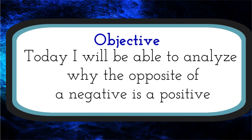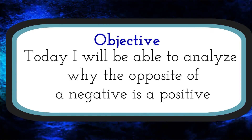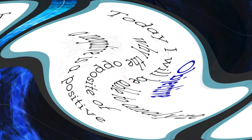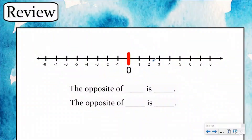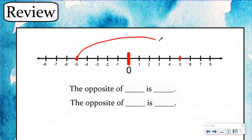Let's start by rewinding back to our last lesson. In our last lesson we were looking at opposites. So let's take a look at five and negative five. We recognized numbers can be opposite if they're on opposite sides of zero and they're the same amount of units away from zero.